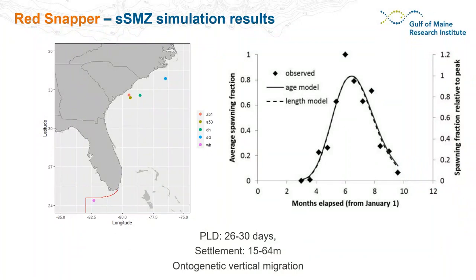Moving to red snapper results from the spawning SMZs, we're releasing virtual larvae from the same five locations but using a different spawning season from April through September, a shorter pelagic larval duration of 26 to 30 days, and settlement habitat between 15 and 64 meters — a slightly larger range and a little deeper than scamp.